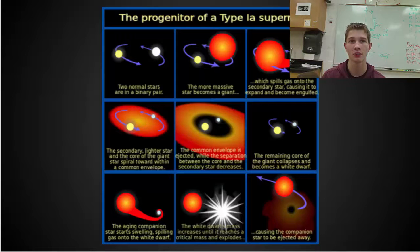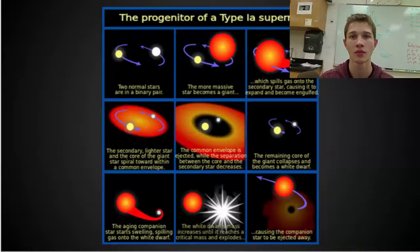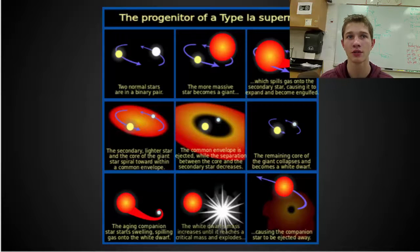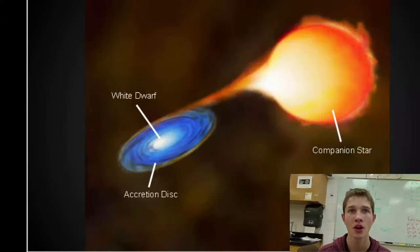For example, the companion star could be orbiting too close, and the gravity of the white dwarf will pull gas from its companion. Or, the companion star could be a red giant in the process of shedding its outer layer of gas. Regardless of the method, an accretion disk forms around the white dwarf, and it will gain mass.